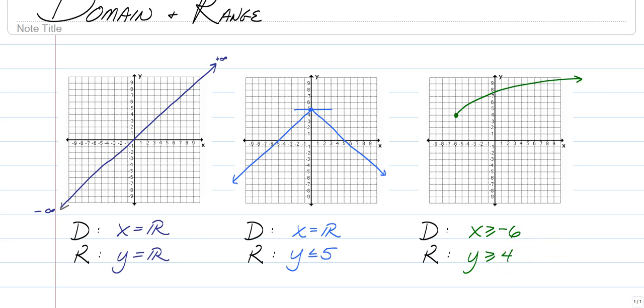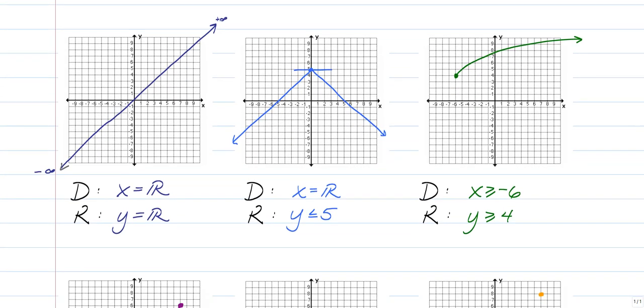So again, like I said, this is sometimes a little bit tricky to do, but you just have to remember a domain is listing what x values are there and range is listing what y values are there.